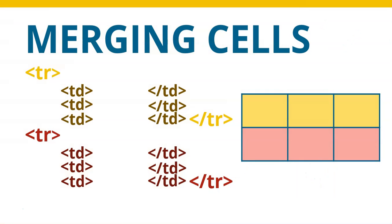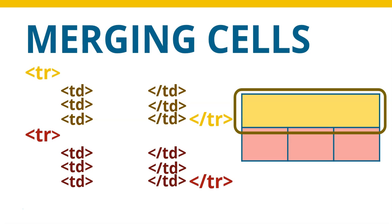Let's take a scenario. We've got our two rows — the yellow row and the red row — and they each have three blocks in each of them. Now, I actually don't want that. That yellow block at the top, those three blocks in the top row, I actually want it to be one block. I want to merge those three little blocks into one. That first row doesn't actually have three blocks anymore — it's only got one block.